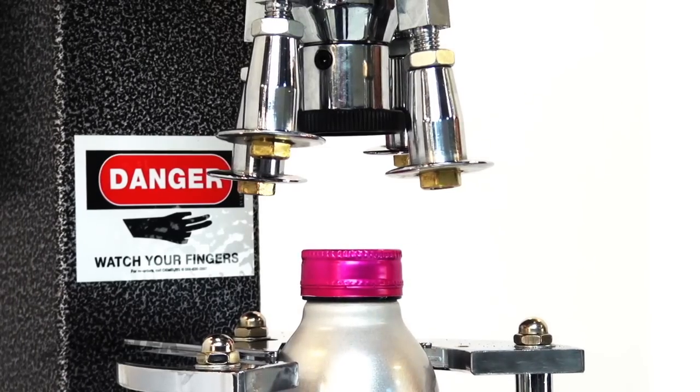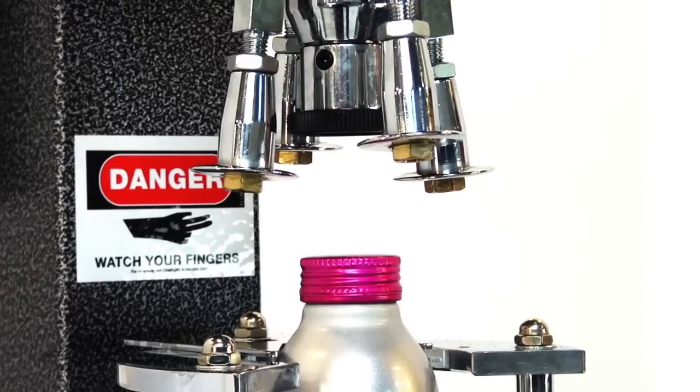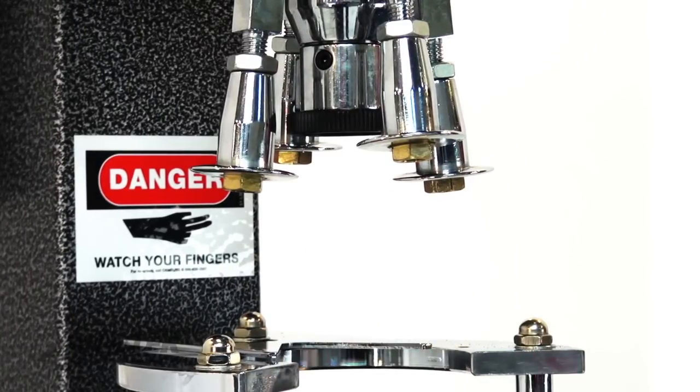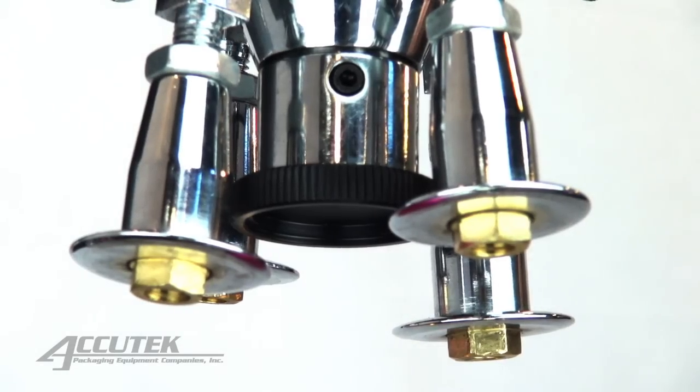The roll-on cap is made tamper-proof when the perforated extension on the bottom of the metal skirt is formed around the bottom lip of the bottle. The bottle cannot be opened without breaking the perforation first.